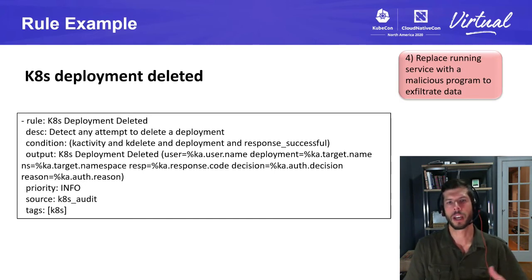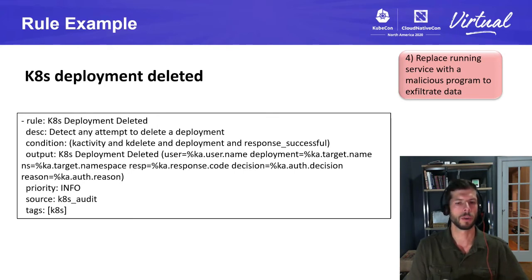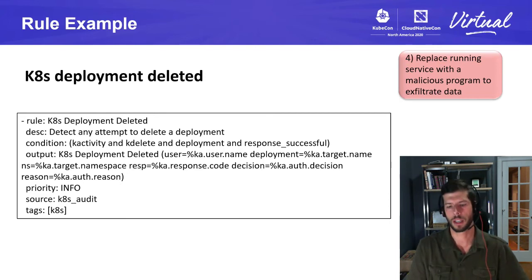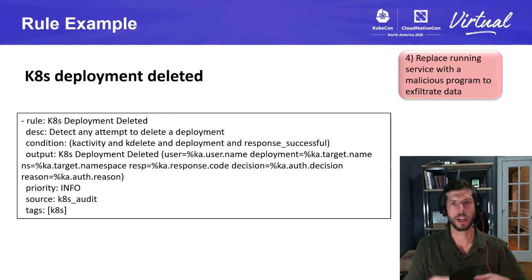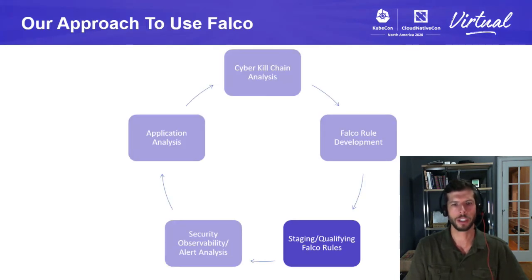For stage four — replacing a running service with a malicious program to exfiltrate data — an example is monitoring for a Kubernetes deployment being deleted. There are also rules to look for a deployment being modified or created. This could be an attacker attempting to replace a Kubernetes deployment with malicious code to exfiltrate data. We can take all of these rules and map them to the kill chain. There are many great Falco rules right out of the box, as well as the ability to customize and focus in on exactly what we're looking for based on our system analysis.